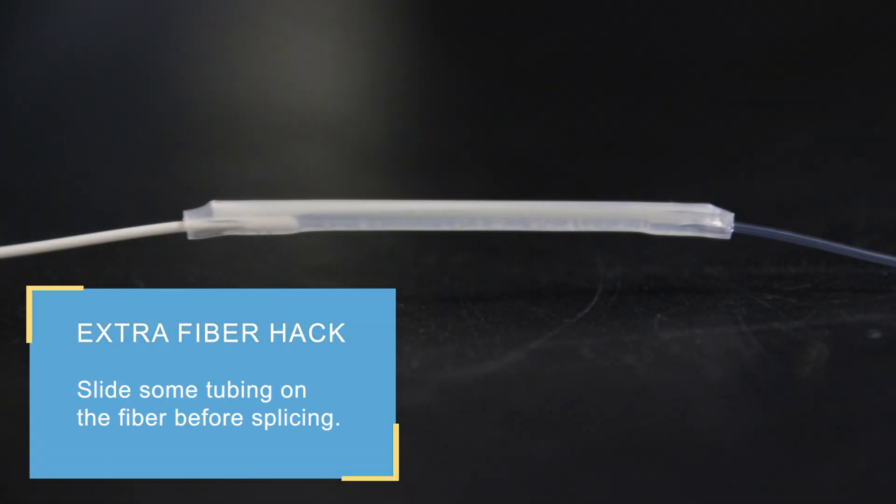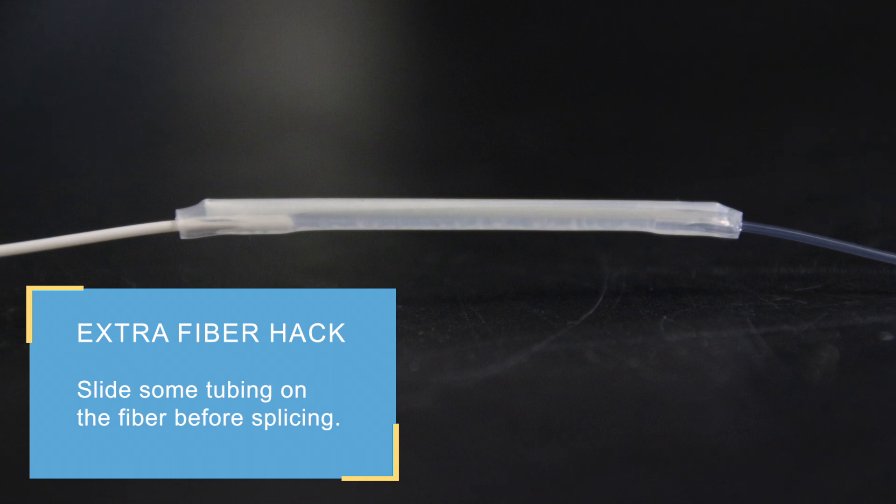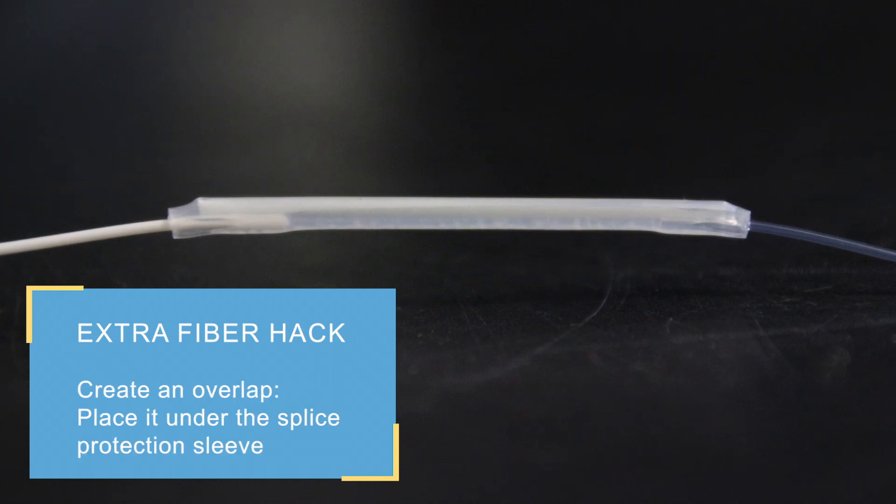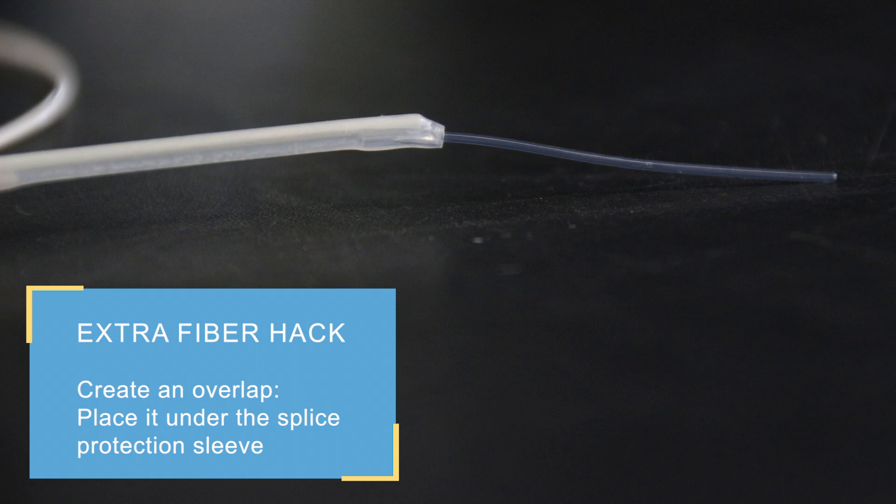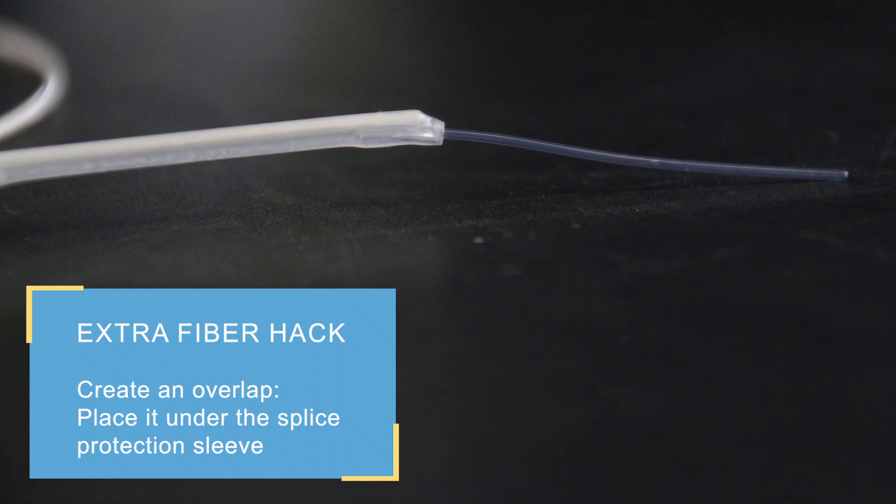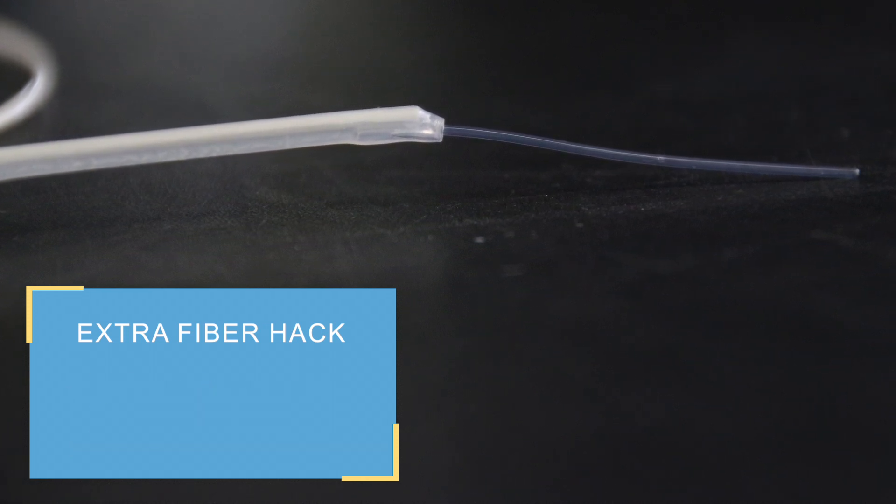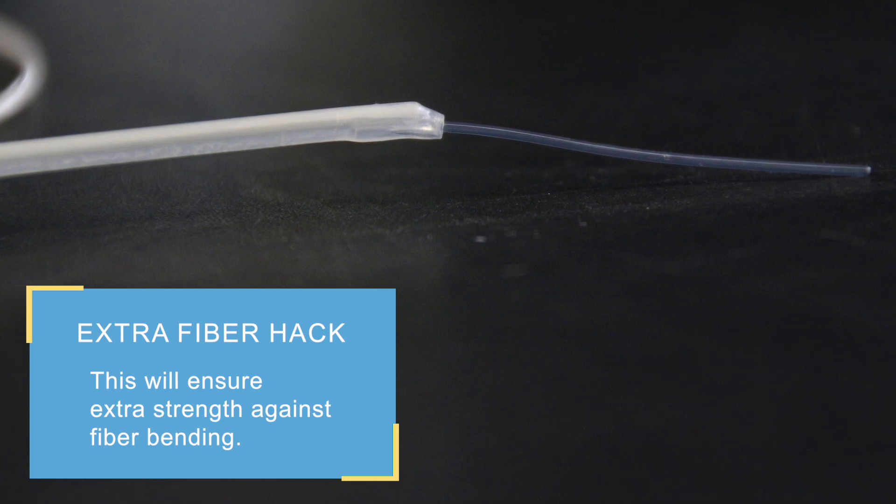Our fiber hack: slide some tubing on the fiber before cleaving or splicing. Place it a few millimeters under the splice protection sleeve to create an overlap. Then proceed to the heating. This will ensure extra strength against fiber bending.